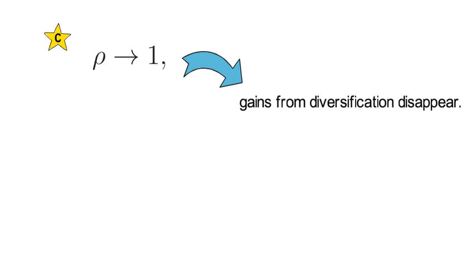And C. As the correlation approaches one, gains from diversification disappear. And such a setting arises if all of an asset's risk is systematic.